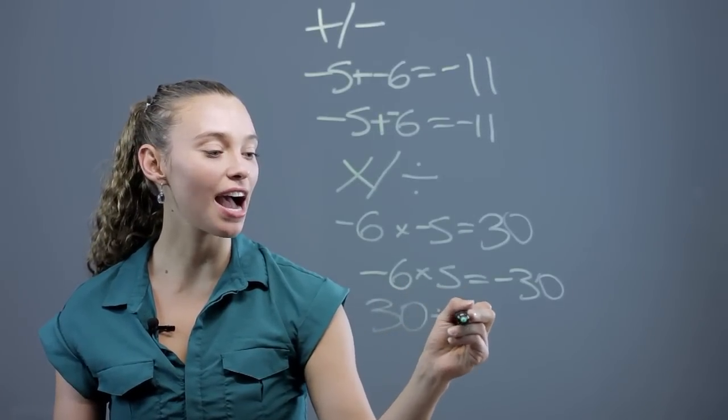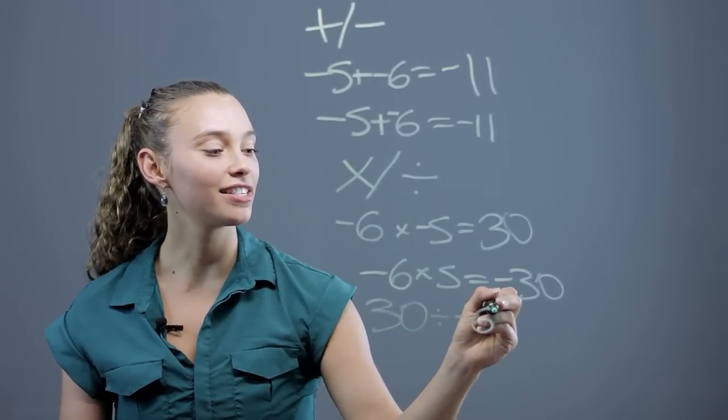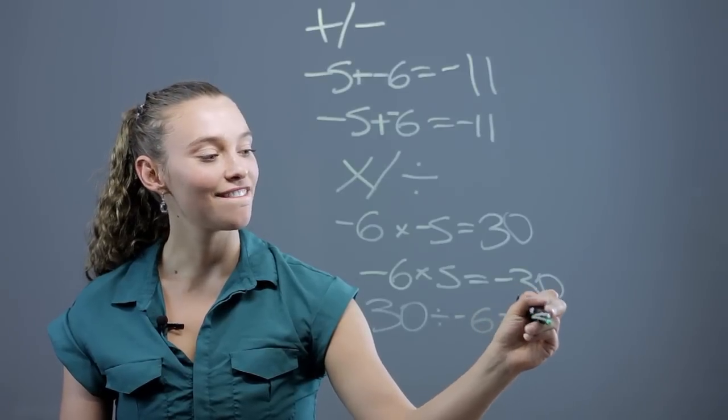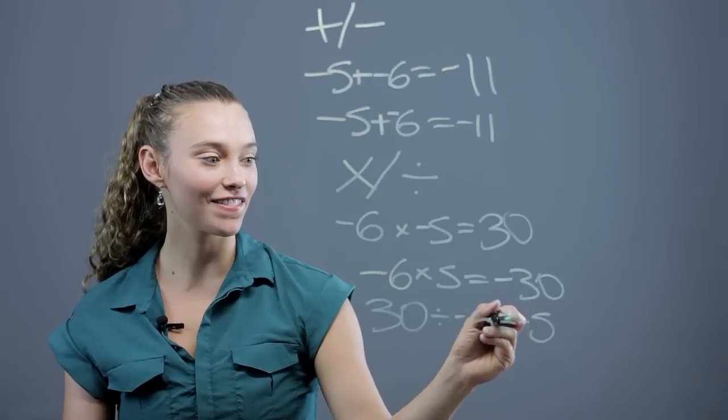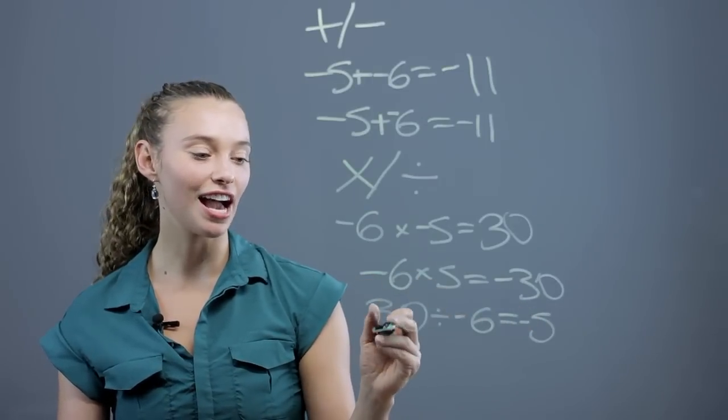30 divided by negative 6 equals negative 5, because there's only one negative sign.